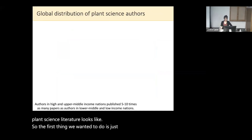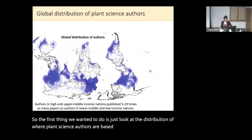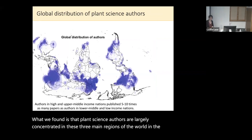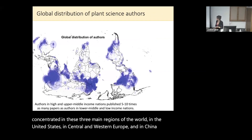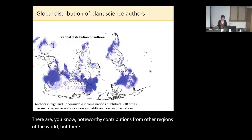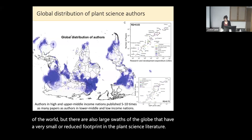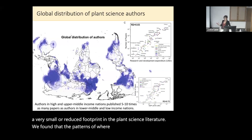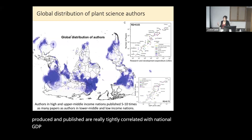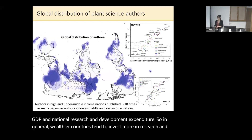The first thing we wanted to do is look at the distribution of where plant science authors are based. We found that plant science authors are largely concentrated in three main regions of the world: the United States, Central and Western Europe, and China. There are noteworthy contributions from other regions, but there are also large swaths of the globe with a very small or reduced footprint in the plant science literature. The patterns of where plant science papers are produced are really tightly correlated with national GDP and national research and development expenditure — wealthier countries tend to invest more in research and development, leading to more publications.